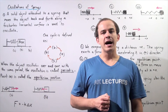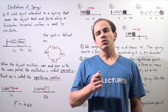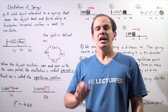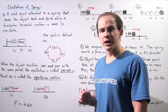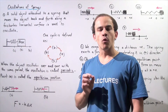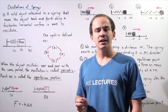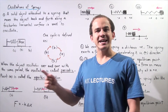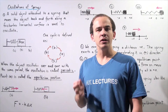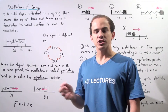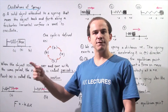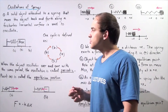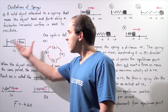How exactly would we define an oscillation? Let's suppose we have a solid object with some mass attached to a spring that moves back and forth along a horizontal frictionless surface. Such an object moving in such a motion is called an oscillating object, and the object's motion back and forth is known as its oscillation. Let's suppose we have the following diagram.